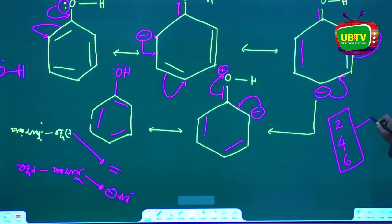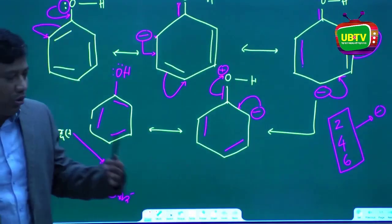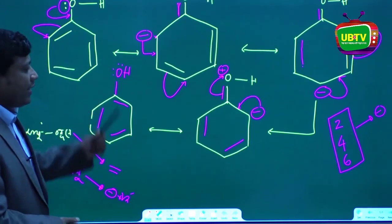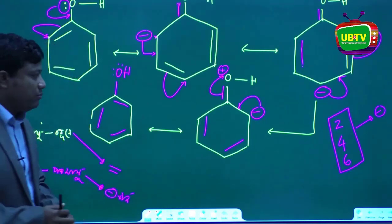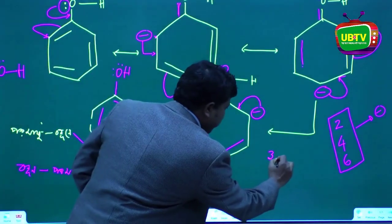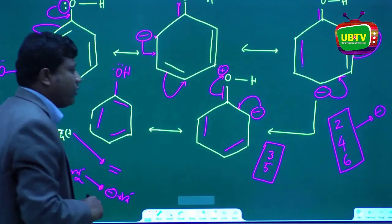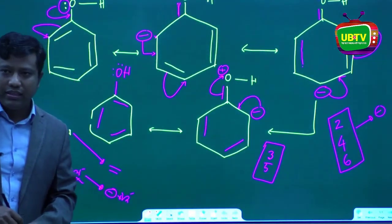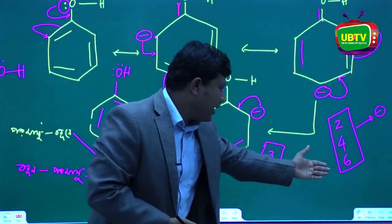This is the 3-nature charge. Benzene — resonance 4. This is the equation diagram. Benzene is the 3-nature and the 5-nature charge.